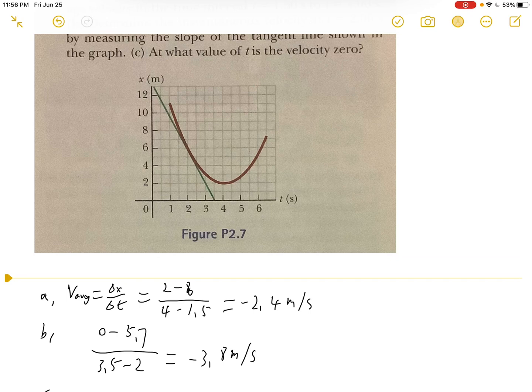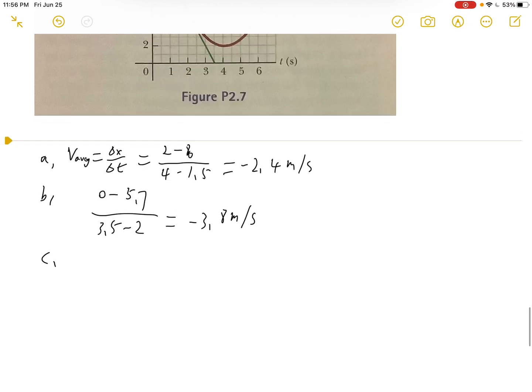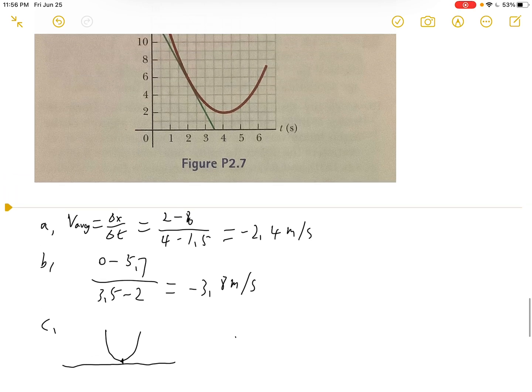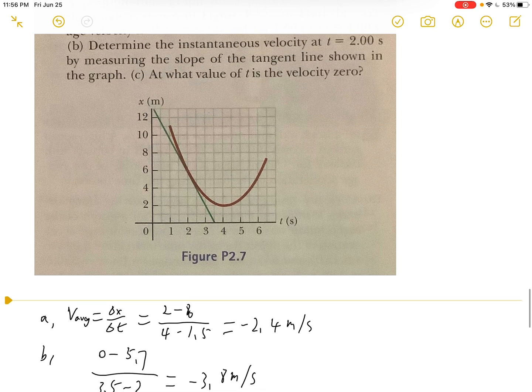For part c, we need to find the value of t where the velocity is zero. If we have a graph like this, the slope of the tangent line at this point will be a straight line, and the slope of a straight line is zero. So at t = 4, the velocity will be zero.